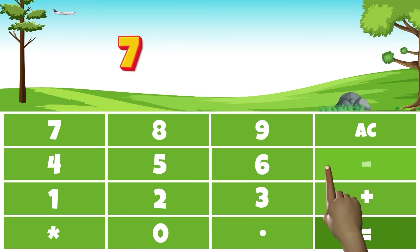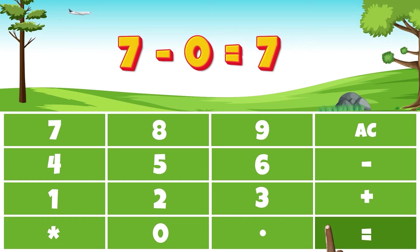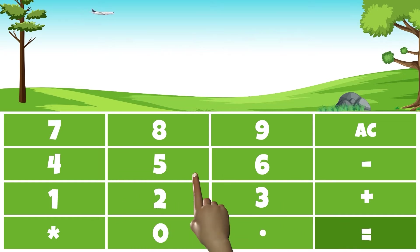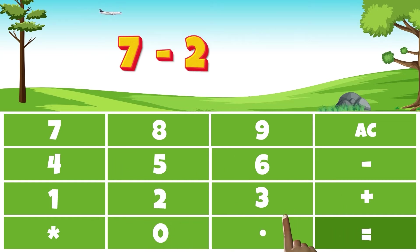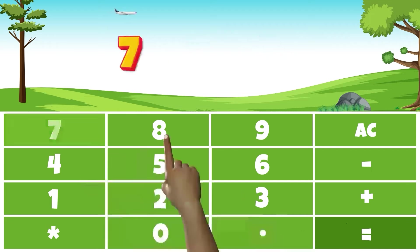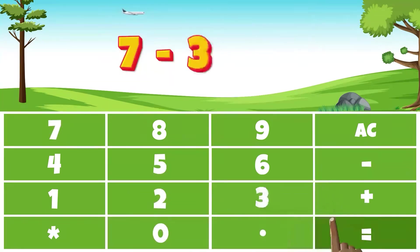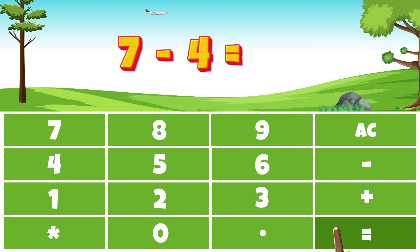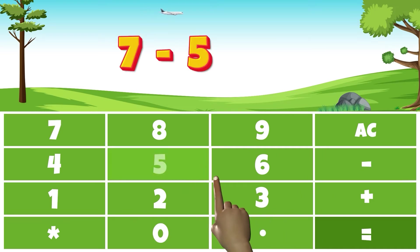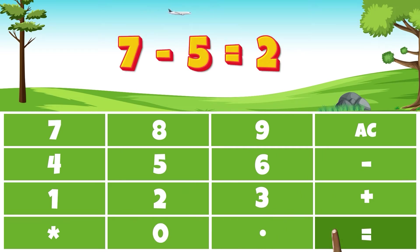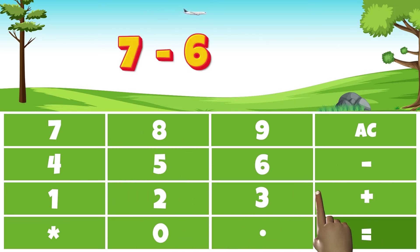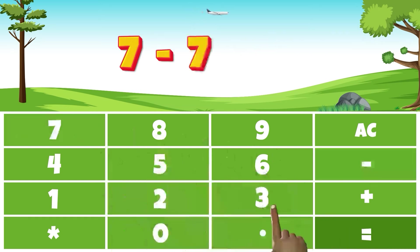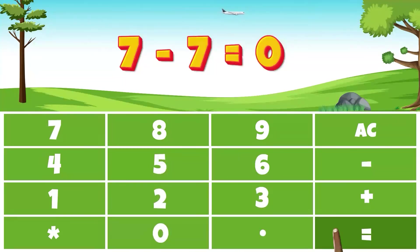Go on. Seven minus zero equals seven. Seven minus one equals six. Seven minus two equals five. Seven minus three equals four. Seven minus four equals three. Seven minus five equals two. Seven minus six equals one. Seven minus seven equals zero.